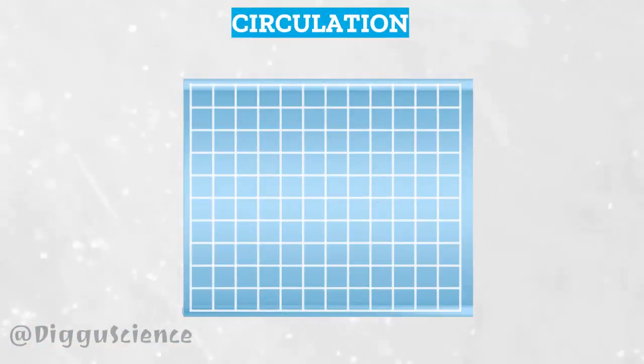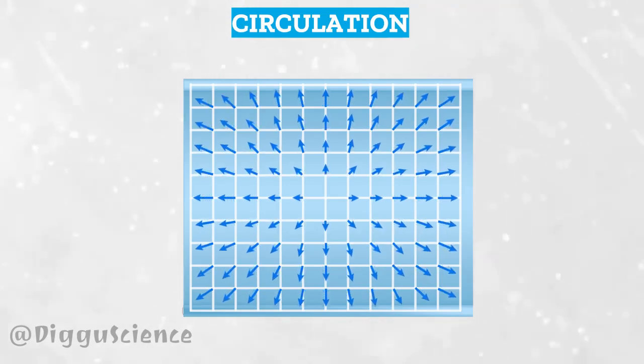As an illustration, the following is a fluid flow in a two-dimensional view. In this flow there is a velocity field, the direction is radial outward. Let's just say, there is a closed curve in the form of a circle.